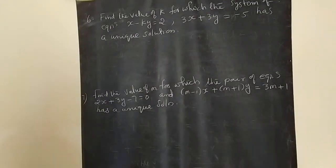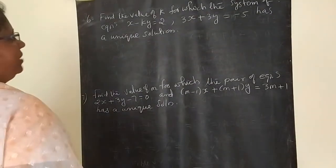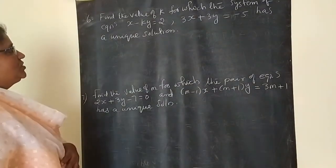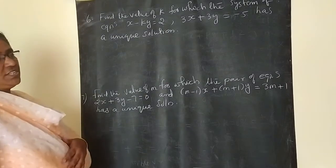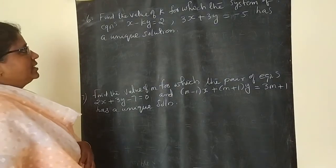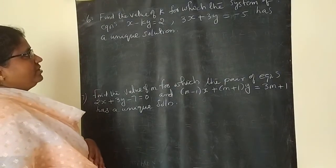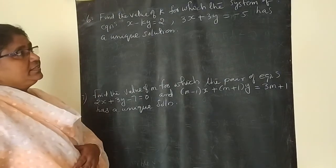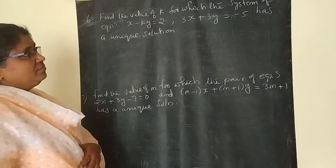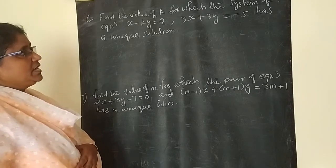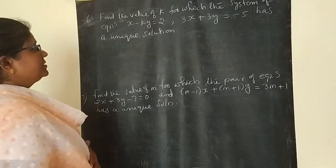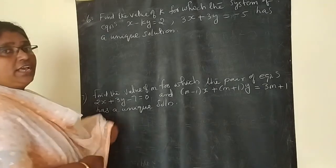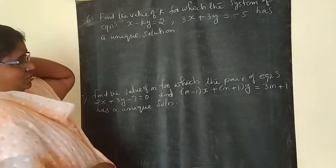Find the value of K for which the system of equations X minus KY equals 2, and 3X plus 3Y equals minus 5, has a unique solution.